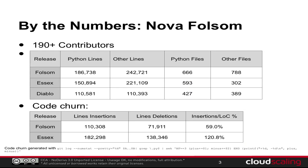Some of you have seen this slide before, but there are a lot of numbers out there about Nova and Folsom. I want to show a different view. This is the number of lines of code from Diablo through Essex to Folsom — you can see it steadily increased. But the amount of code churn, defined as lines inserted or removed according to git log, has actually gone down. In Essex there was enough churn to rewrite all of Essex once, which is remarkable. That's gone down a lot in Folsom. The amount of code has gone up and the churn has gone down — I think this is a sign of maturity.